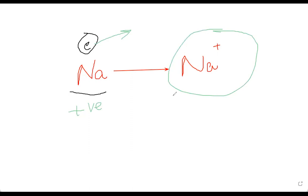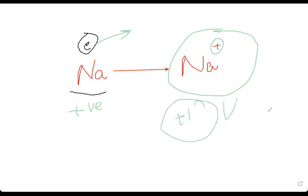When any element loses an electron, it becomes a positive ion. So sodium, being a metal, will lose an electron and become a positive ion. Sodium is going to donate its electron to other elements. Sodium will have a plus one charge because it is going to lose one electron. This positive one is the valency of sodium — whenever sodium reacts, it loses one electron and becomes a sodium positive ion.